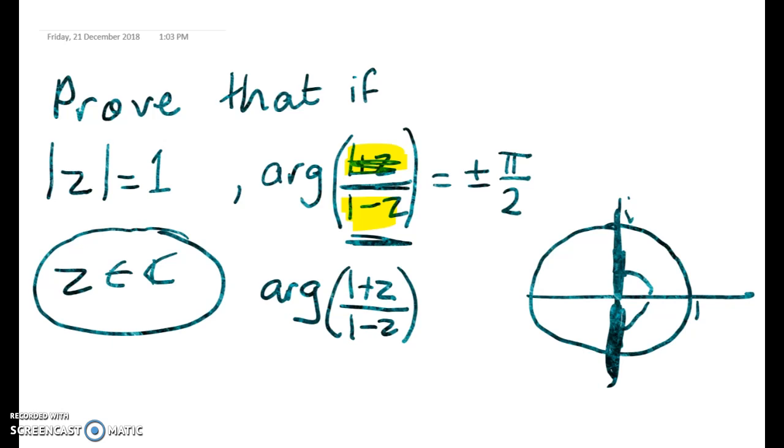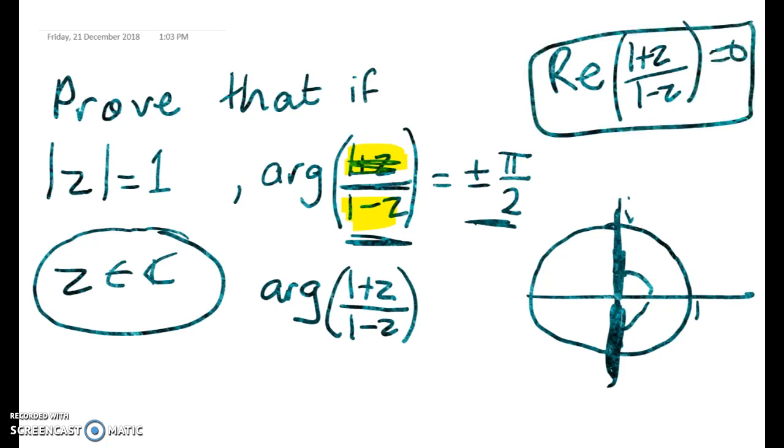And in order to have the argument be plus or minus π/2, that means that we're trying to show that the real part of (1+z)/(1-z) is equal to 0. Okay, so if we can show that, then we go back to this graph and we say, hey, we're done.